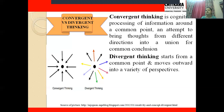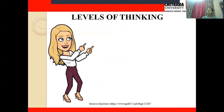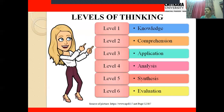This was all about the different types of thinking — creative thinking, perceptual or concrete thinking, problem-solving thinking, and convergent and divergent thinking. Now let's move forward and see the levels of thinking. There are a total of six levels: level one is knowledge, level two is comprehension, level three is application, level four is analysis, level five is synthesis, and level six is evaluation.